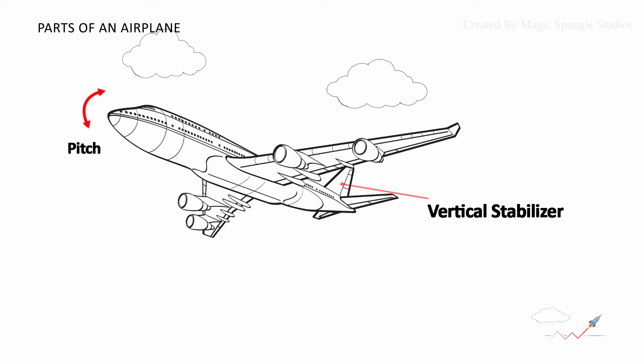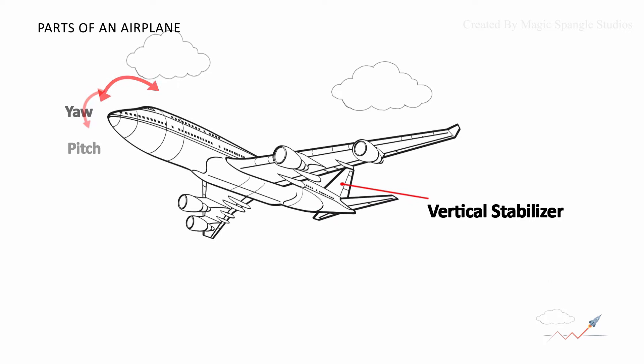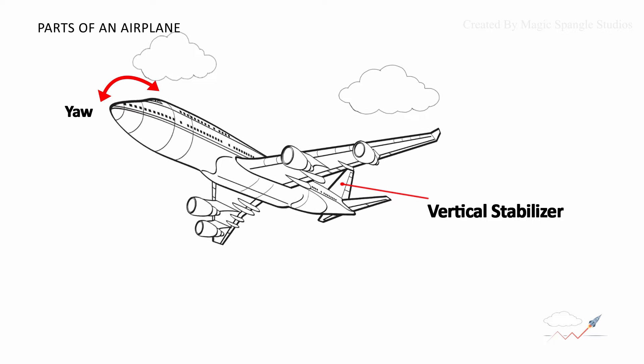Vertical stabilizer provides stability for a disturbance in yaw. Yaw is side-to-side motion of the nose.